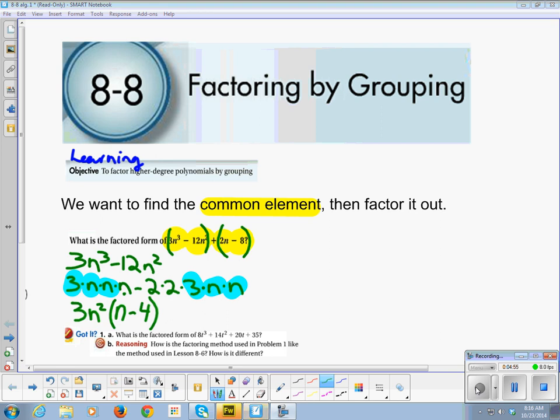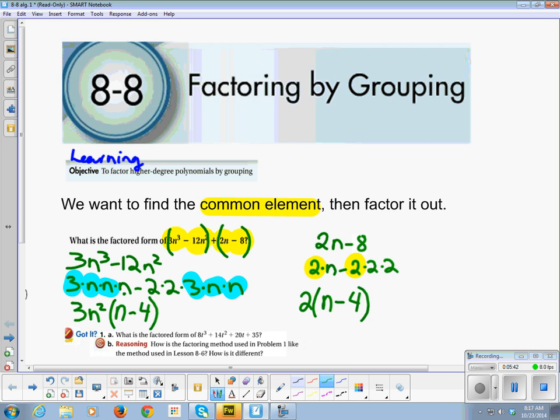Now let's deal with this 2n - 8. This is 2 × n. And this is 2 × 2 × 2. What do we have in common between 2n and 2 × 2 × 2? The 2s. So we're going to take the 2 out. And we're going to be left with an n, a minus sign, and 2 × 2 is 4.